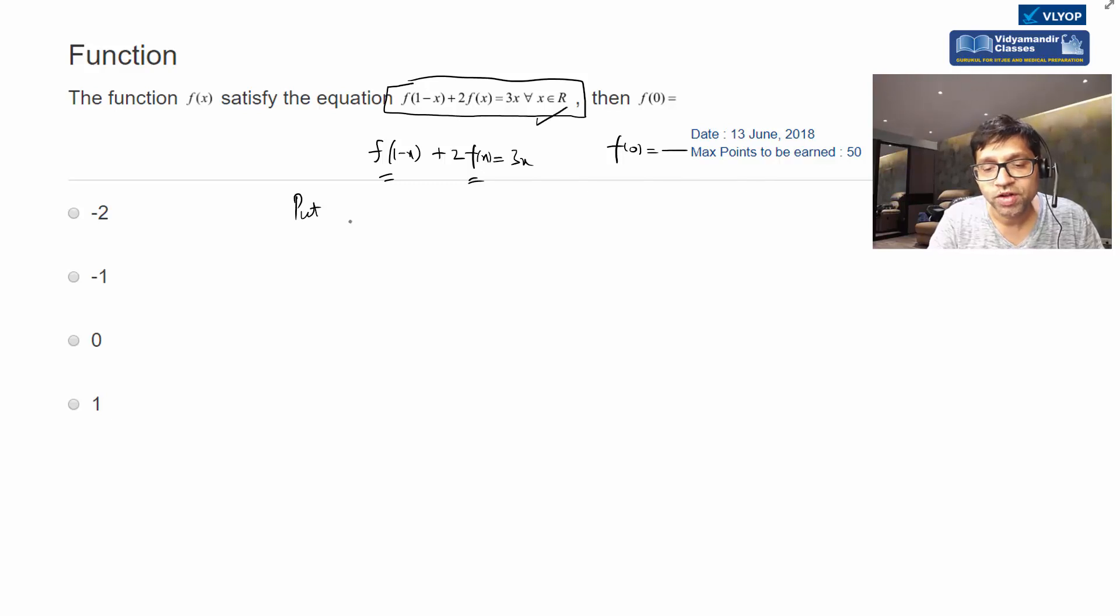So we replace x by (1-x) in this functional equation. That's what we do: replace x by (1-x) and see what we get. Where we had (1-x), it becomes x. And f(x) becomes f(1-x), equal to 3(1-x).